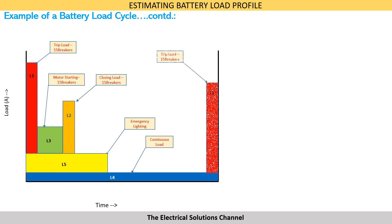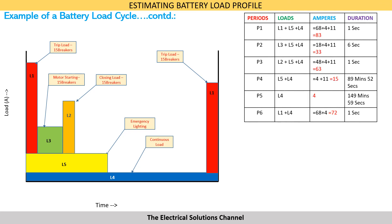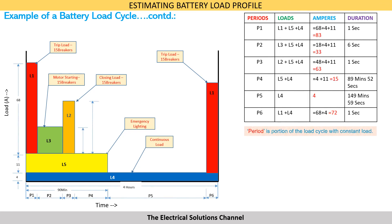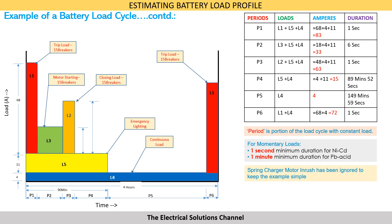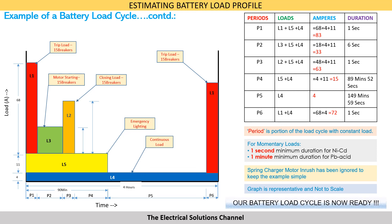We can also tabulate the loads to depict the total load at any given instant in the battery load cycle. The battery load cycle is divided into various periods, where a period is the portion of the load cycle with constant load. For momentary loads, 1 second shall be the minimum duration for nickel cadmium batteries, while for lead acid batteries the duration is kept as 1 minute. Spring charging motor inrush has been ignored to keep the example simple. With this, our battery load cycle is complete and ready for use.